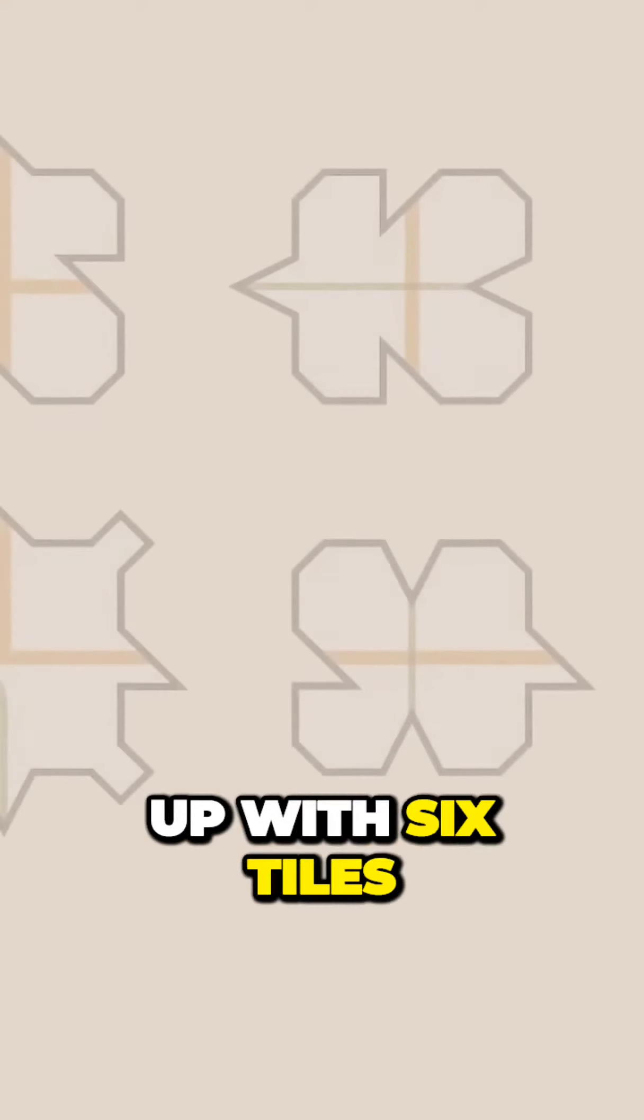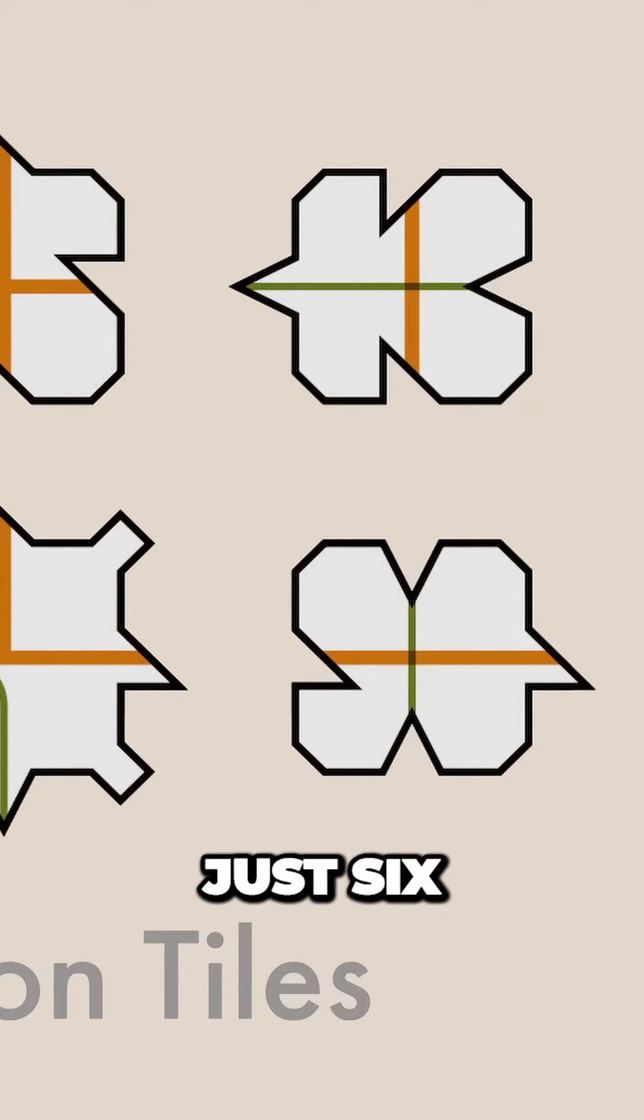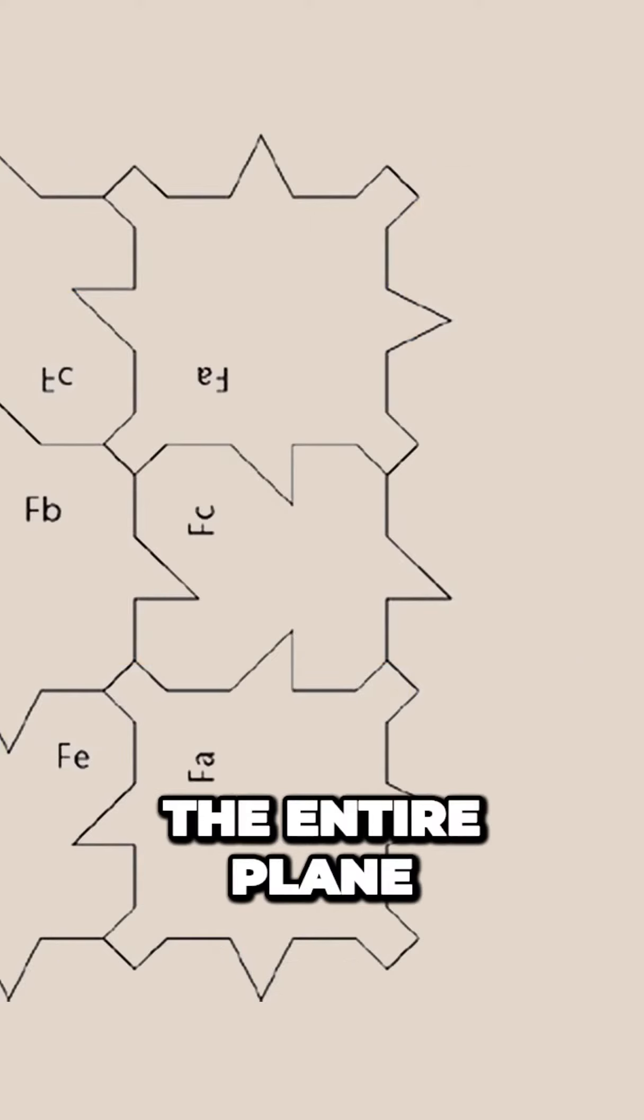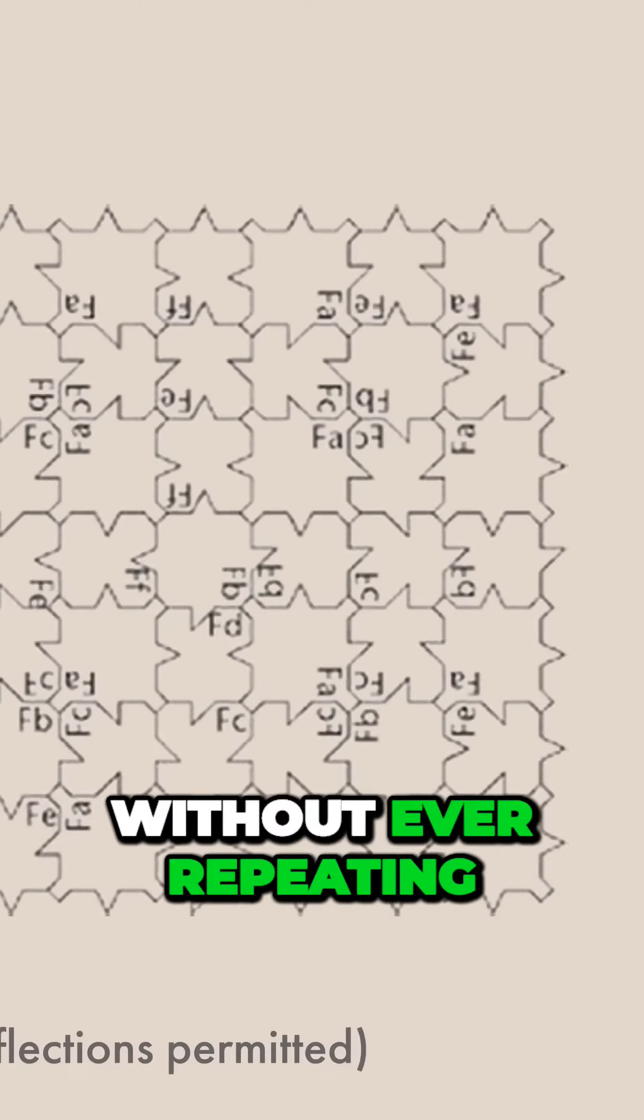And then in 1969, you had Raphael Robinson, who came up with six tiles, just six, that could tile the entire plane without ever repeating.